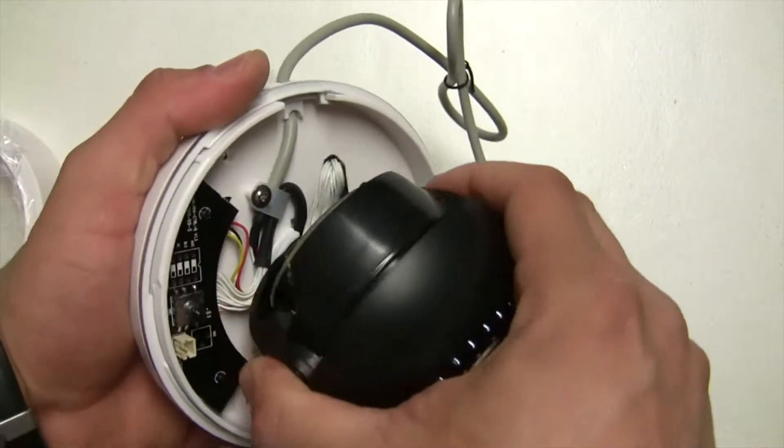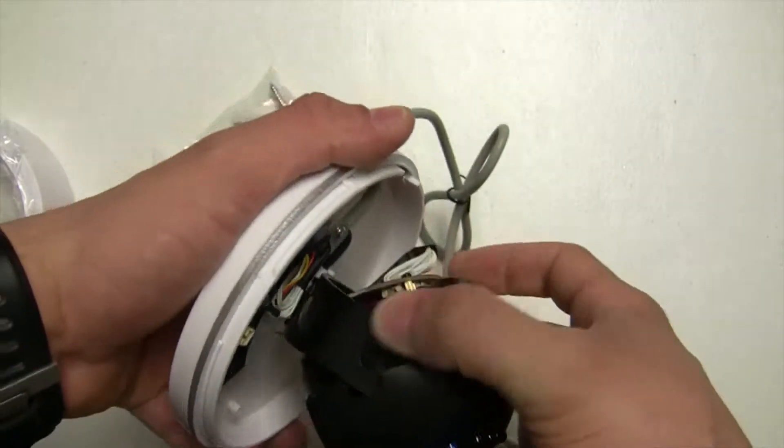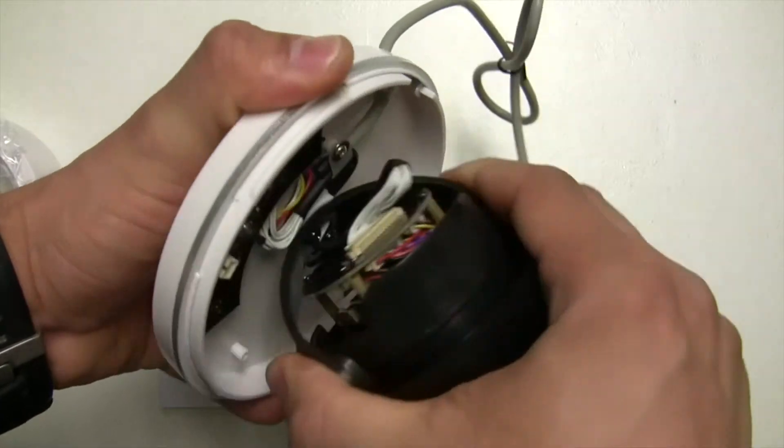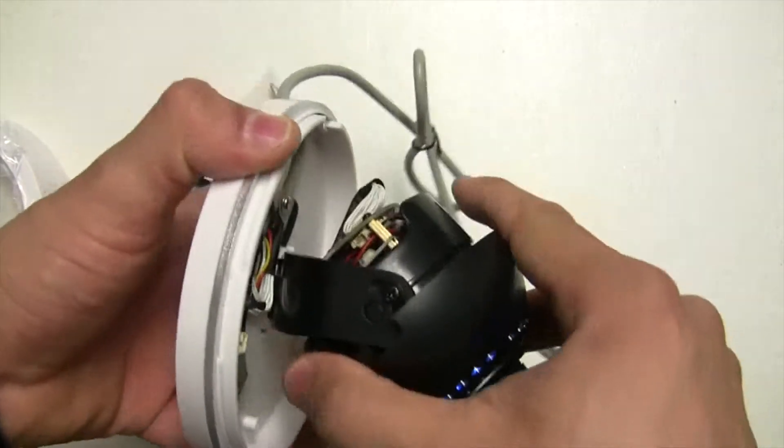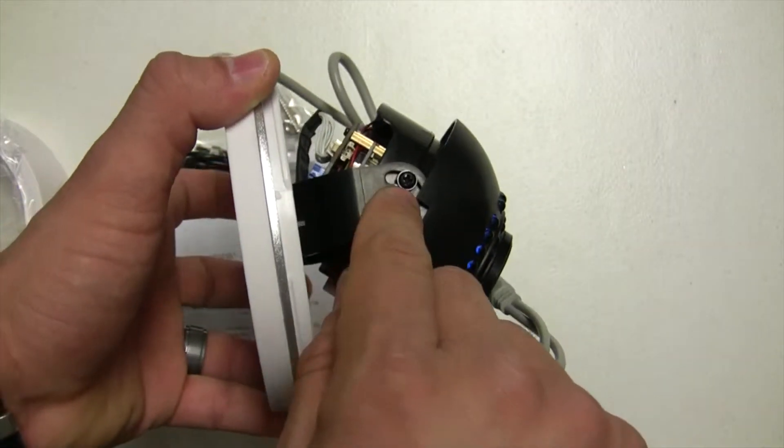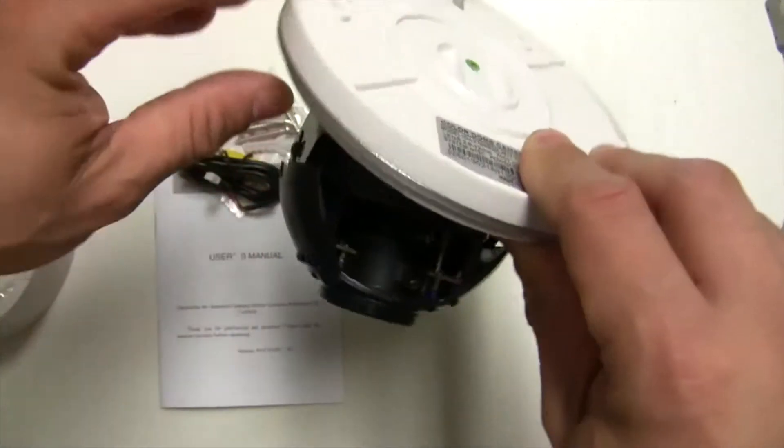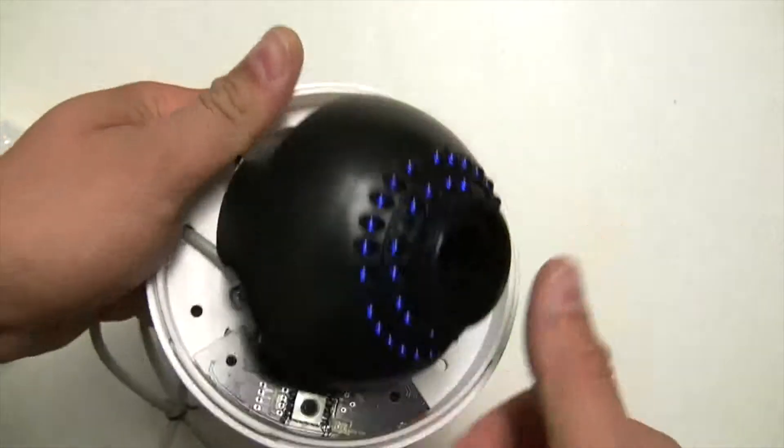This particular camera can turn as well by holding the mount right here, the base of the camera. And it can move up and down when these two screws are loose. You can position it anywhere pretty much. It's very easy to install.